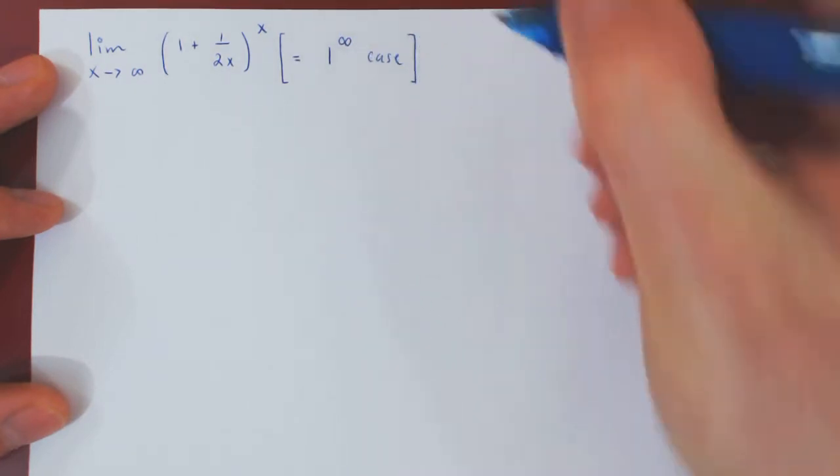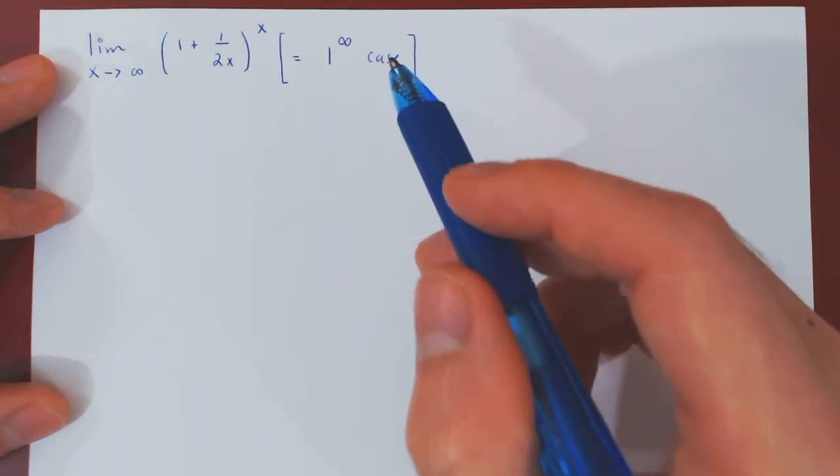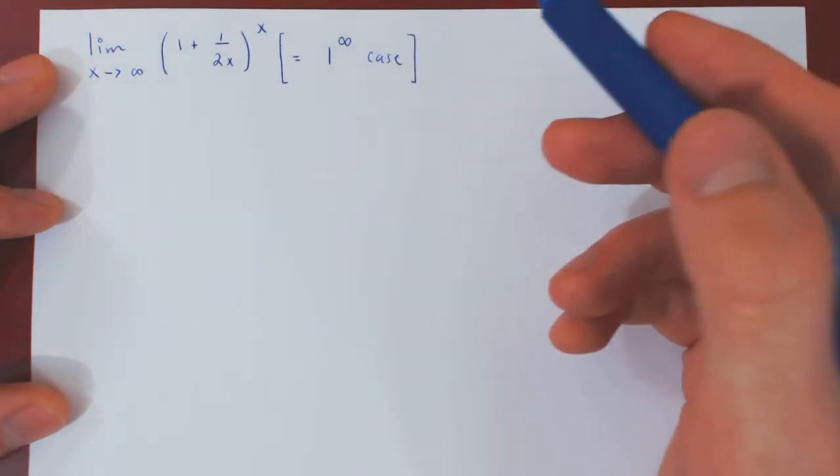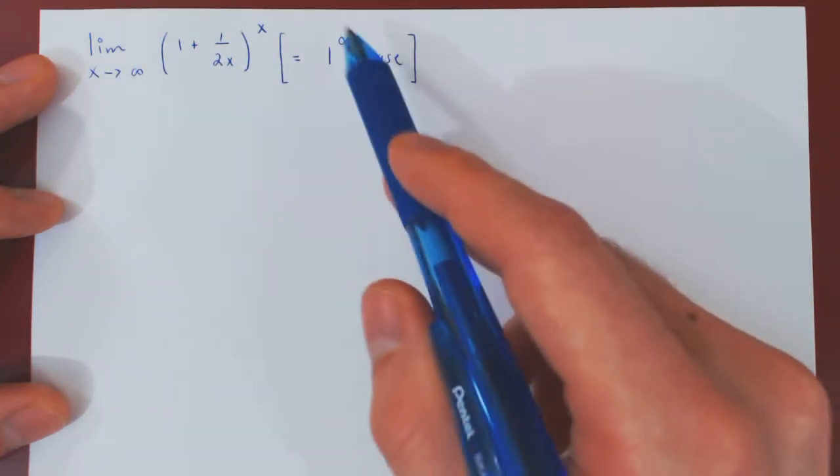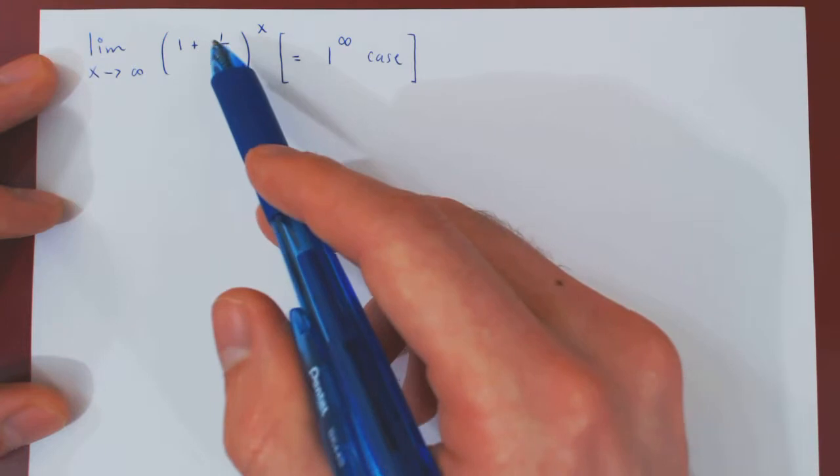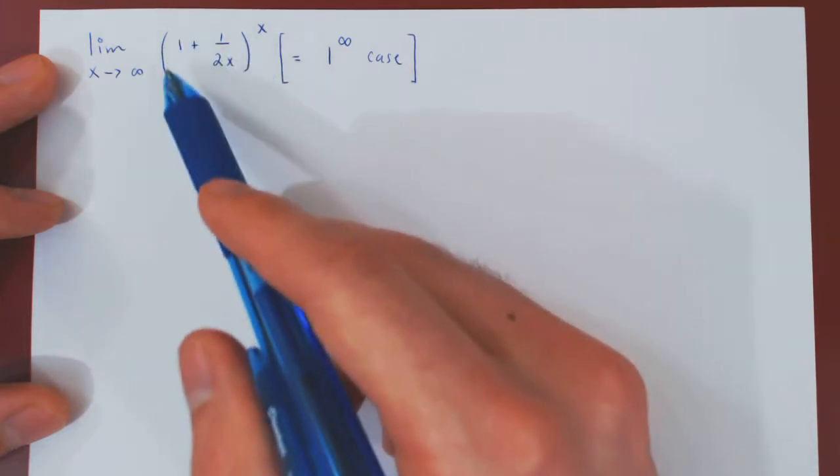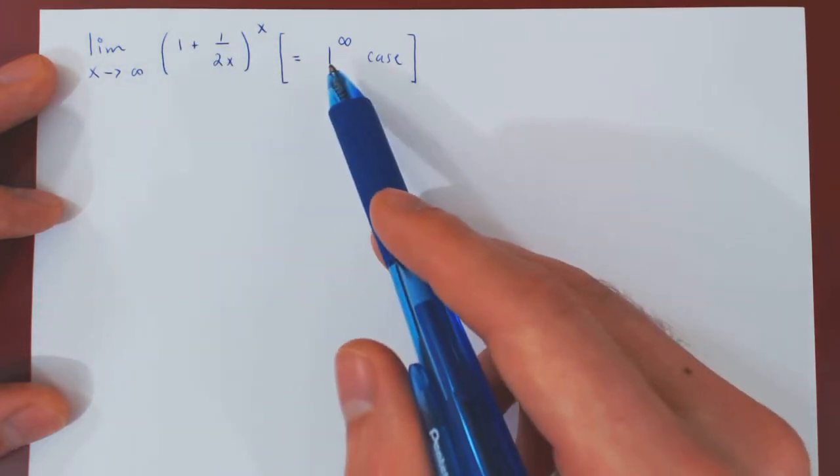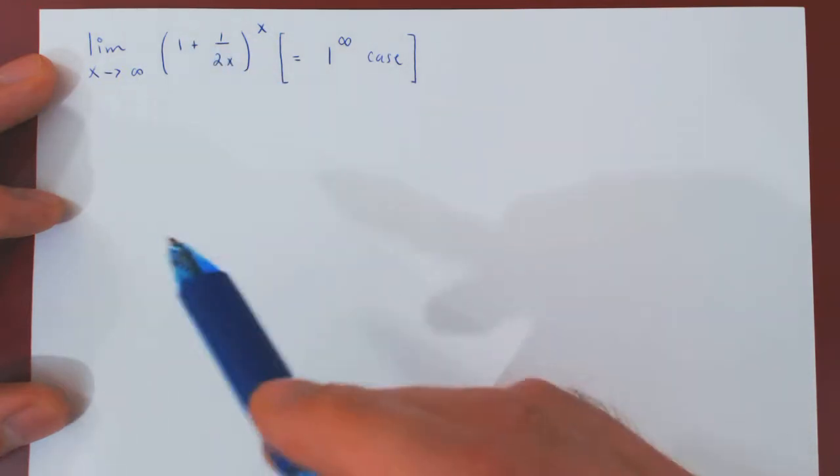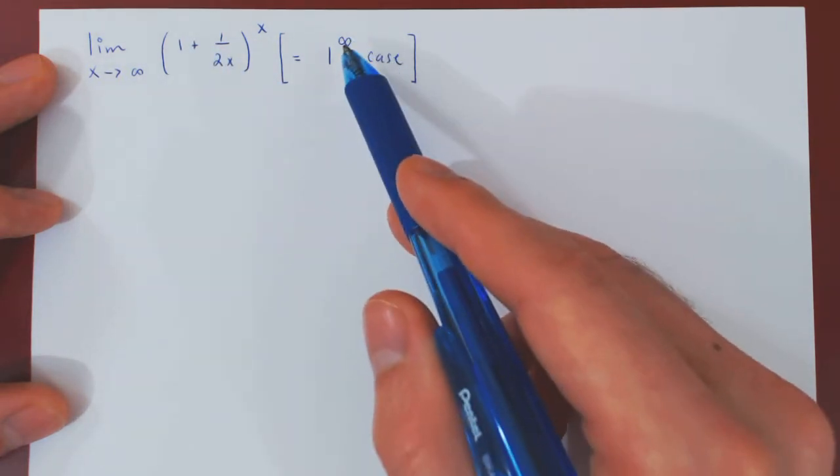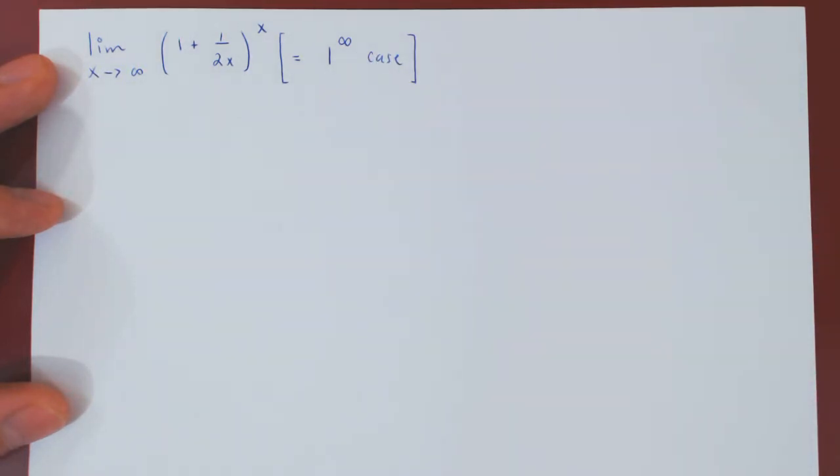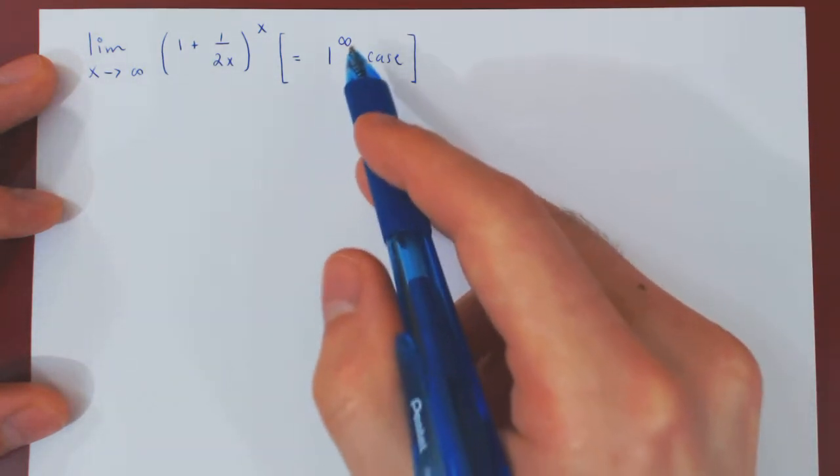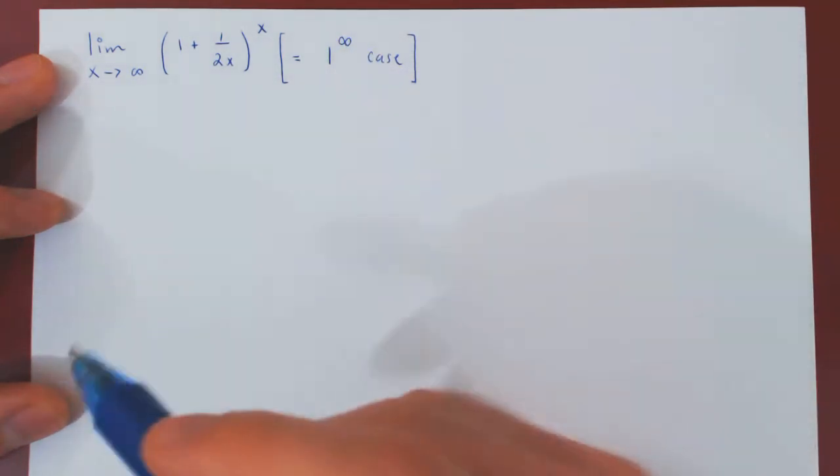So we have a 1 to the infinity case, and you have to be really careful here not to jump to the conclusion that the limit is therefore simply 1, as 1 to any kind of power is 1. Because if you look at the expression here, it is not exactly 1. It is very close to 1, but never exactly 1. So you cannot jump to the conclusion that this will be simply 1.